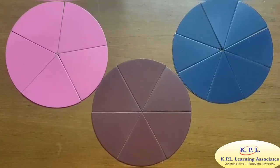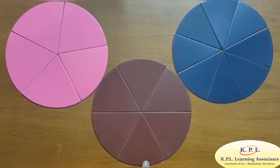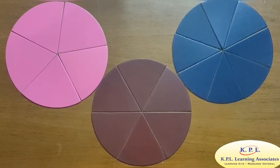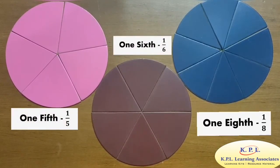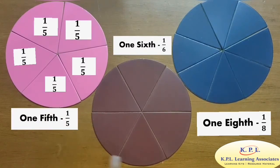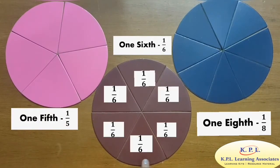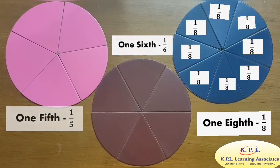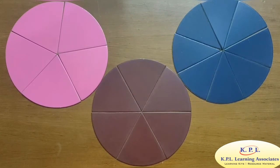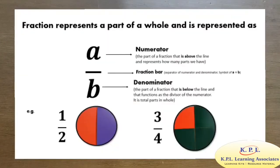Similarly, divide the circle into five, six, and eight equal parts. Each part is known as one fifth, one sixth, and one eighth. So a fraction represents a part of a whole and is represented in a by b form, where a is the numerator and b is the denominator.